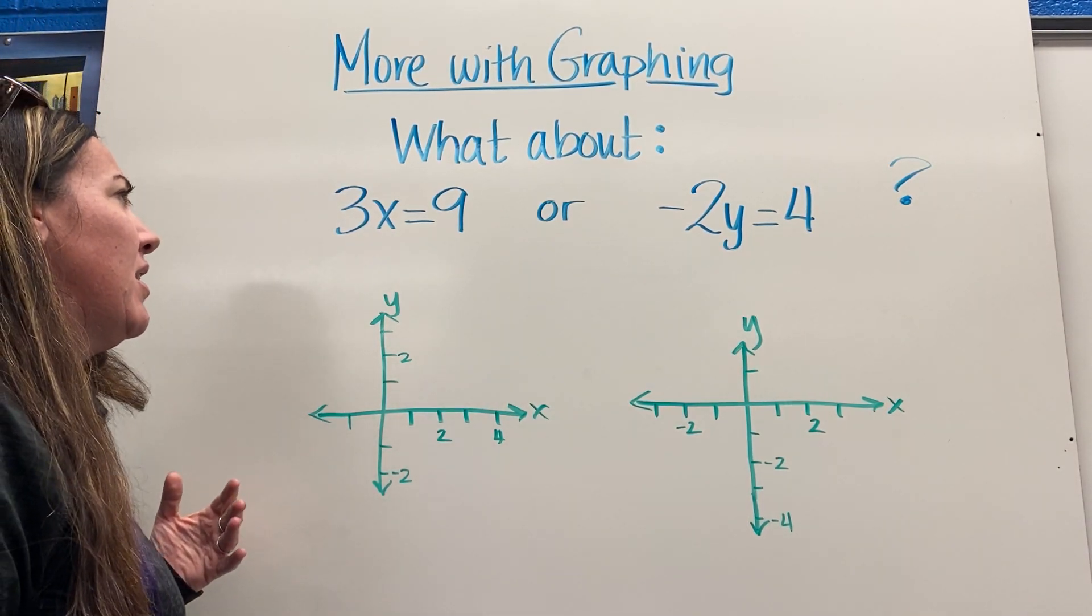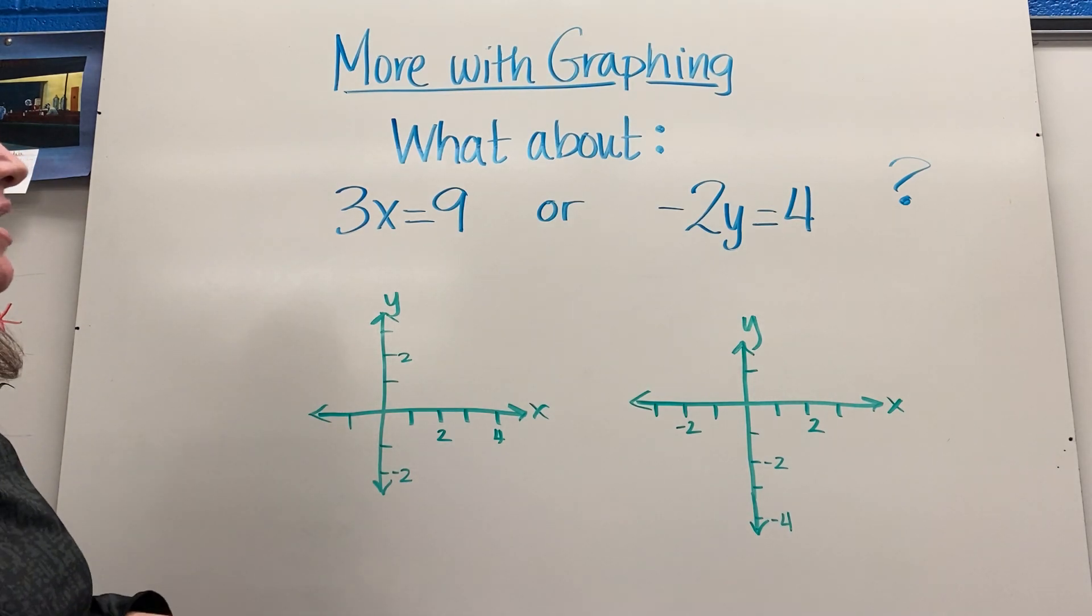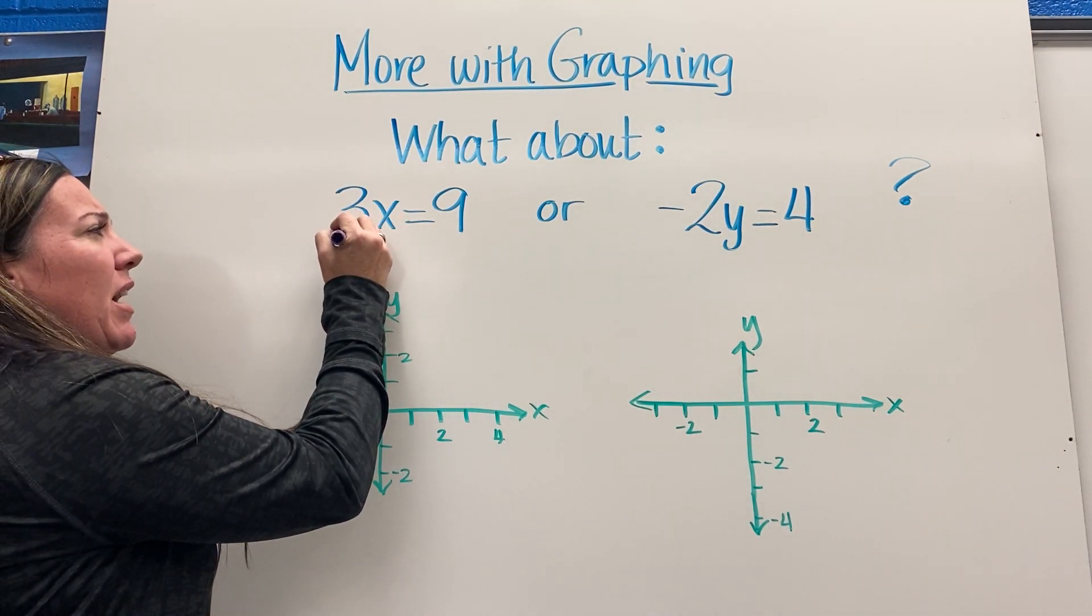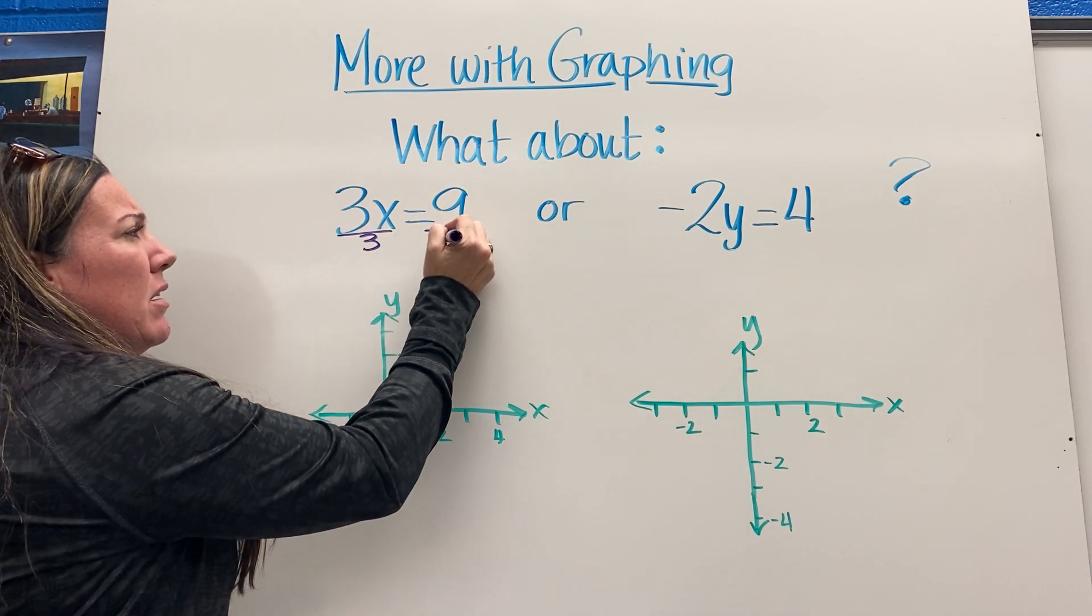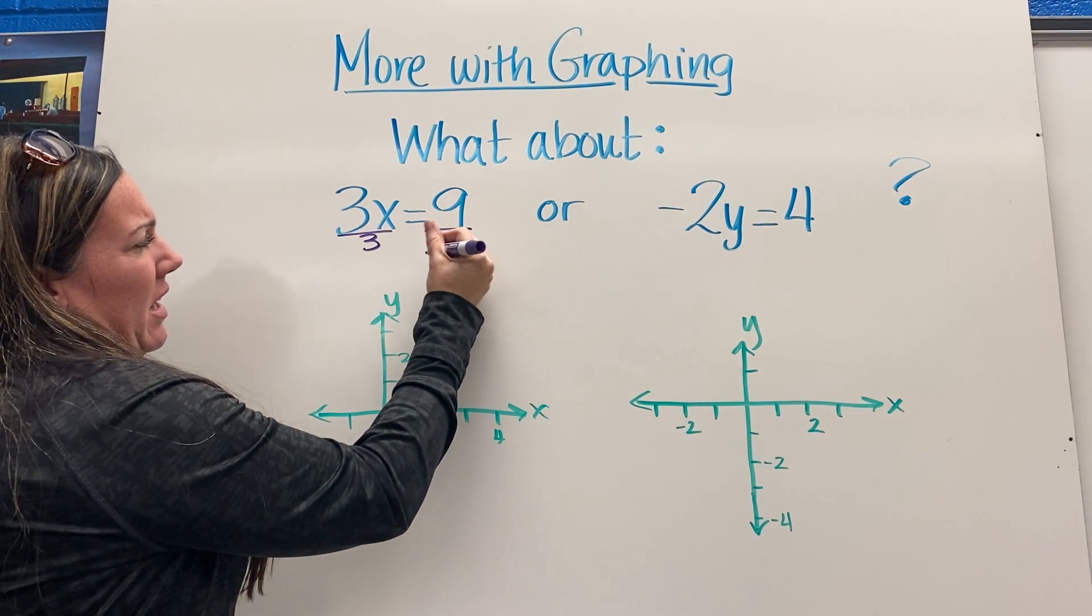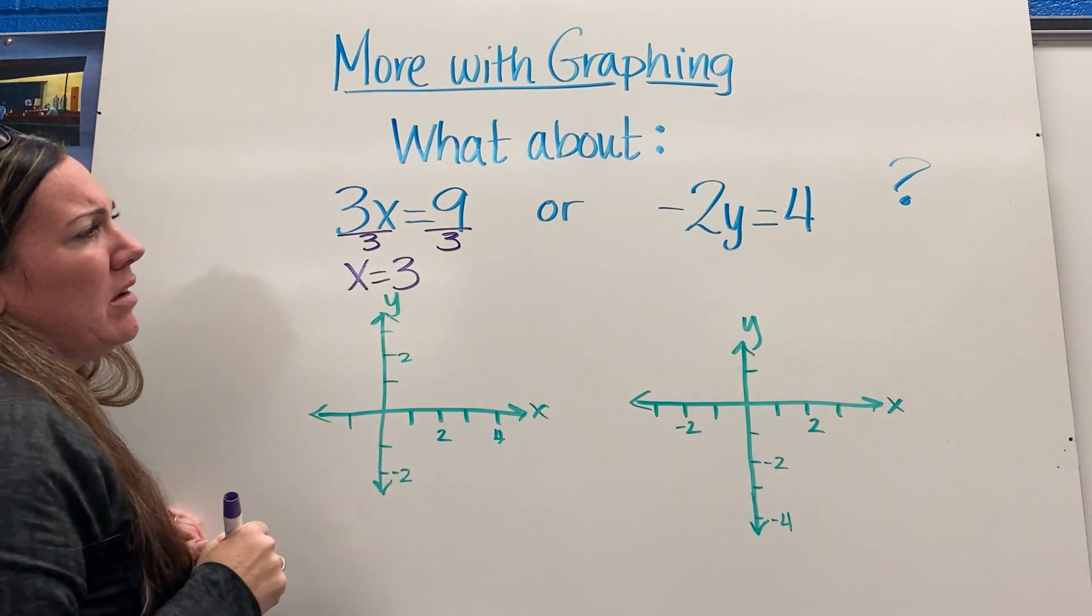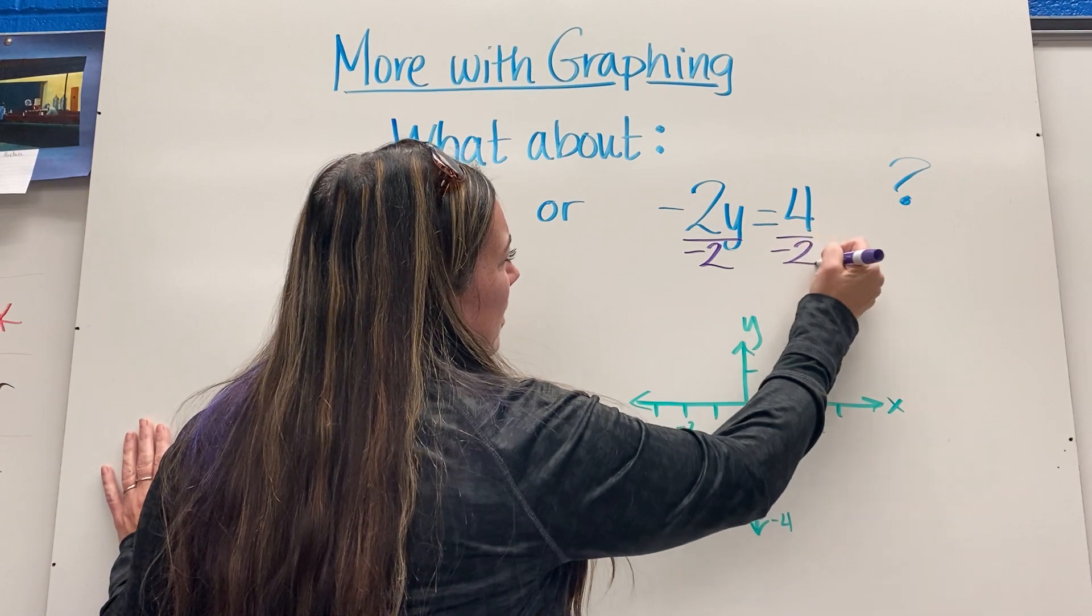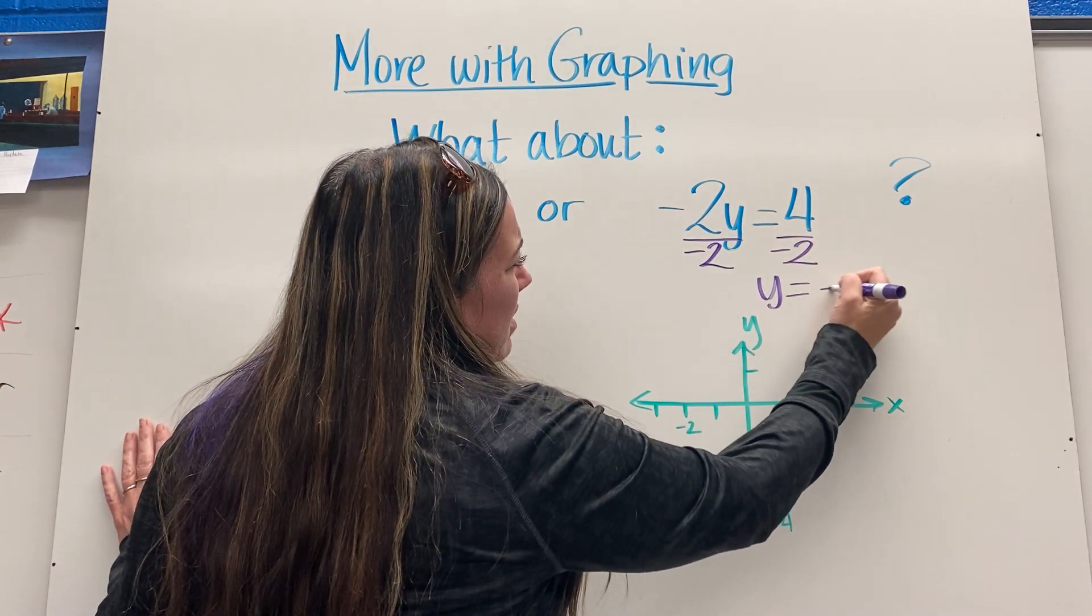Let's first kind of get this by itself. For here I would divide by 3 and I get that x equals 3. Over here I'll divide by negative 2 and I get y equals negative 2.